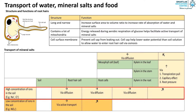In the xylem, the mineral salts are transported via transpiration pull, capillary effect, and root pressure. Finally, it diffuses into the mesophyll cells in the leaves. However, if the concentration of mineral salt in the soil is lower than the cell sap, the root hair has to absorb these mineral salts against a concentration gradient, that is, by active transport.